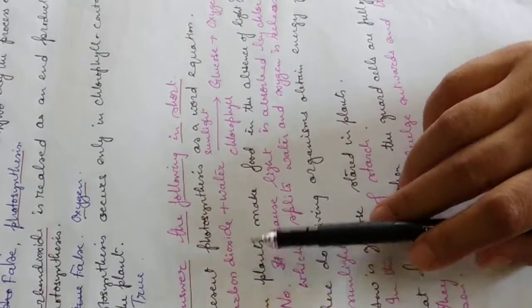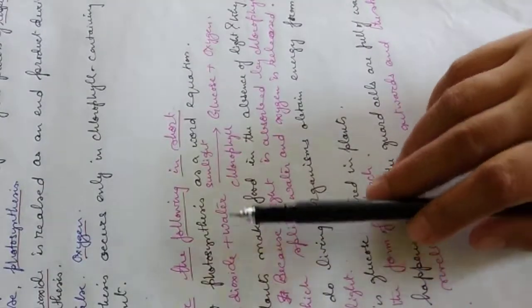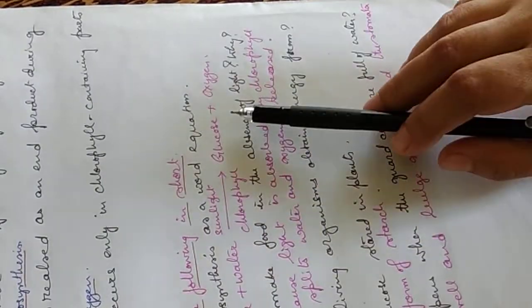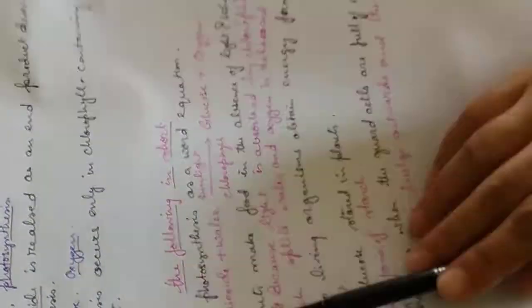Represent photosynthesis as a word equation. Carbon dioxide plus water that in presence of sunlight and chlorophyll gives glucose and oxygen. That's a word equation.